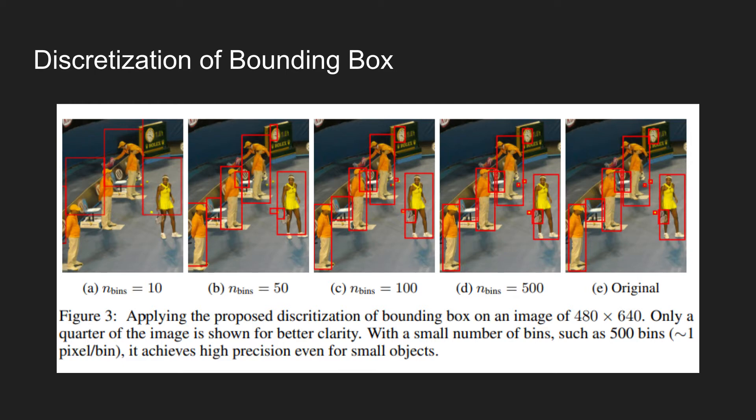For example, the figure shows different discretization of bounding boxes on an image of 480 by 640. When using only 10 bins, as shown in the leftmost example, think of it as dividing each x and y axis into 10 sections, and each section will act as a token.